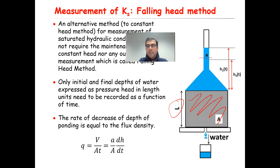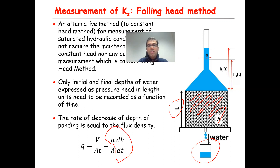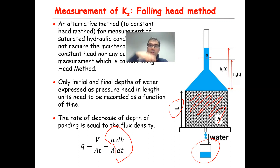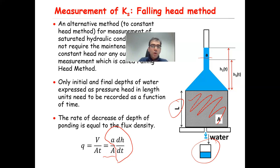To calculate the Darcy velocity through the soil column, Q equals V, where capital V is the volume of collected water divided by the area divided by T. So instead of V divided by T, I write small a times dH/dt. dH/dt is the velocity of the receding water level in the container. I multiply that by small a to get the volumetric flux, then divide by capital A to get the Darcy velocity in units of length per time. So the Darcy velocity for this system equals (small a / capital A) times dH/dt.